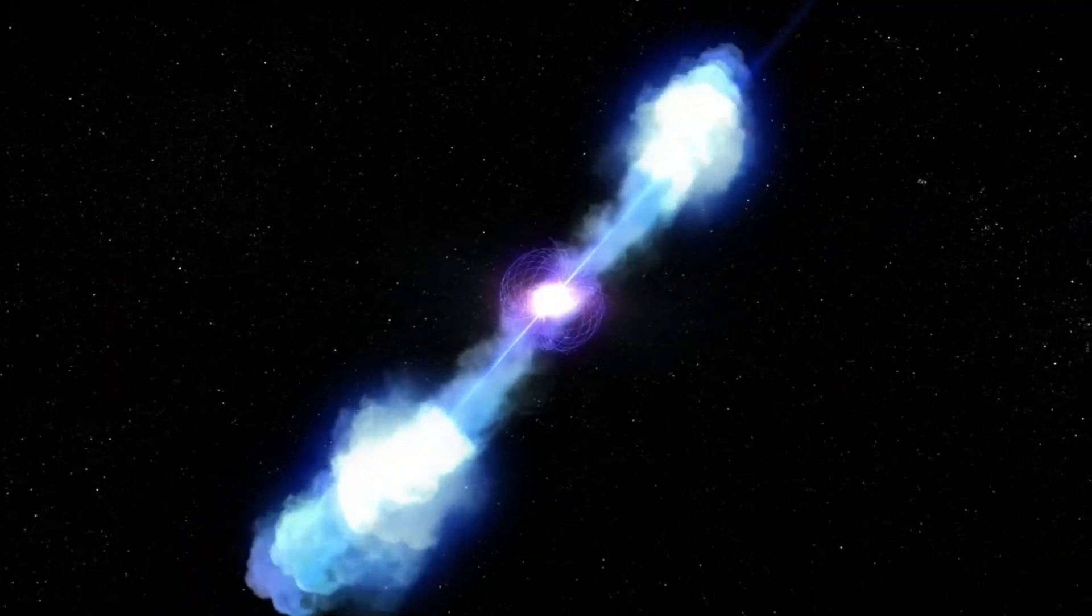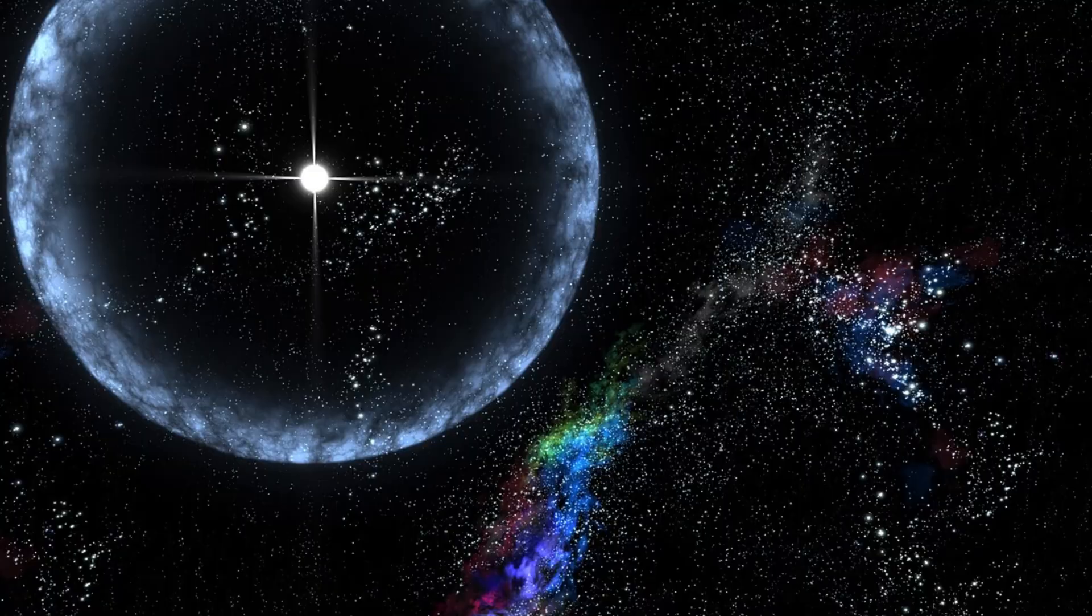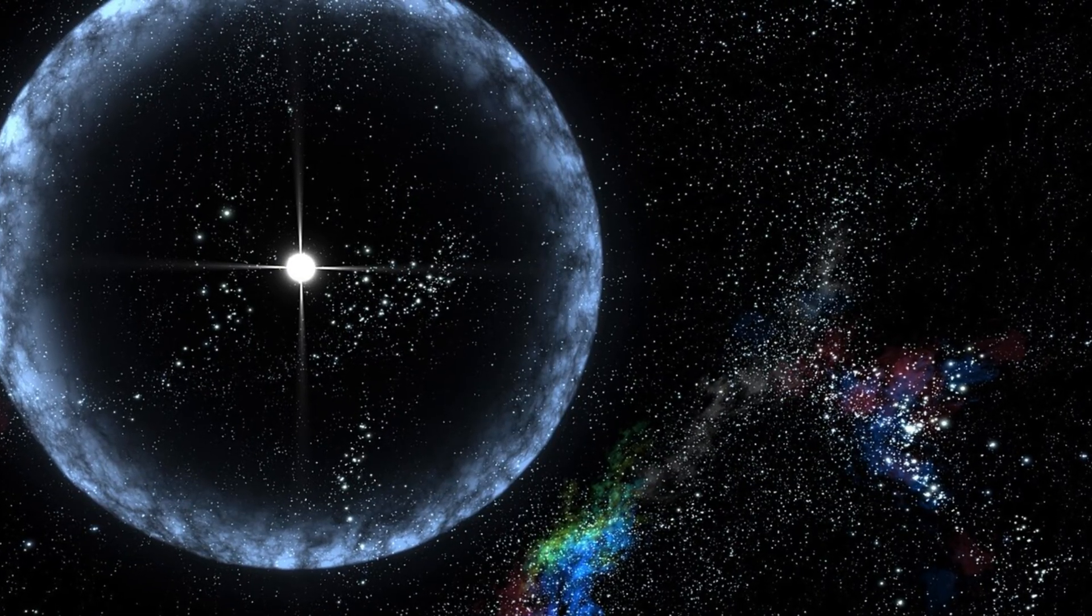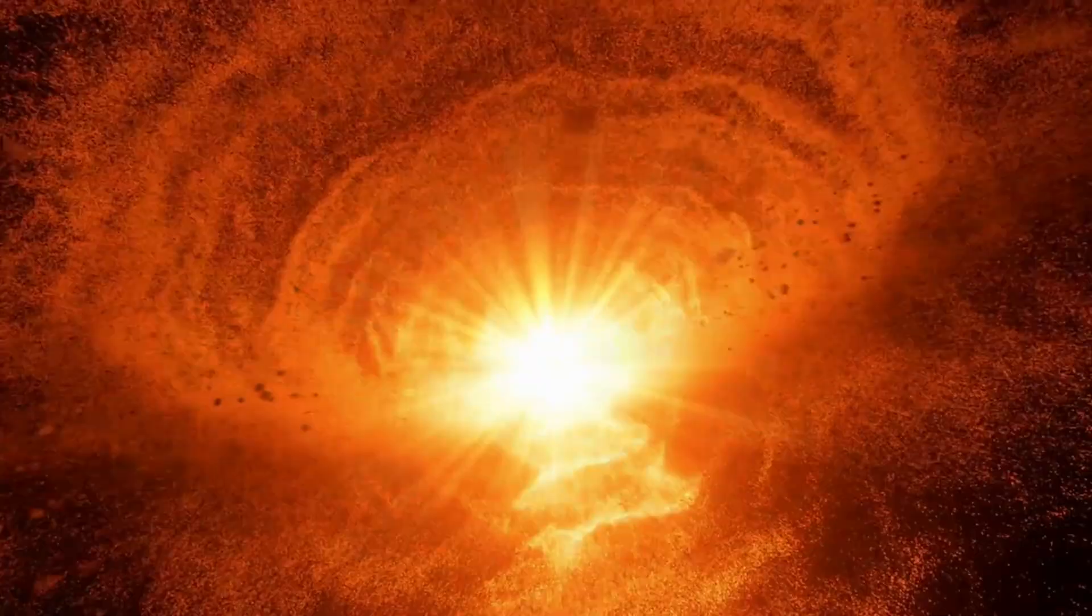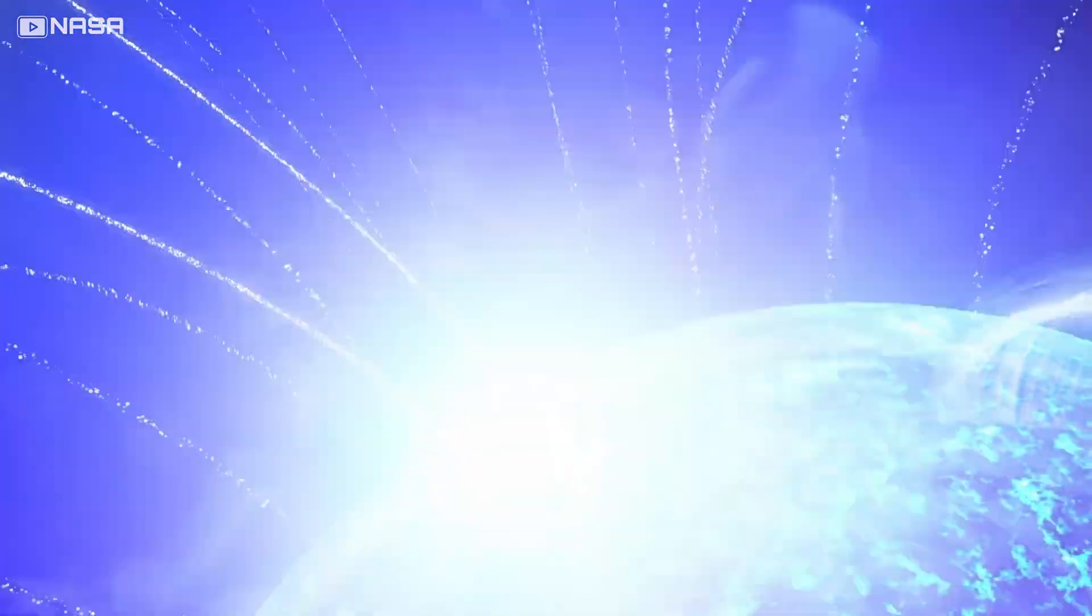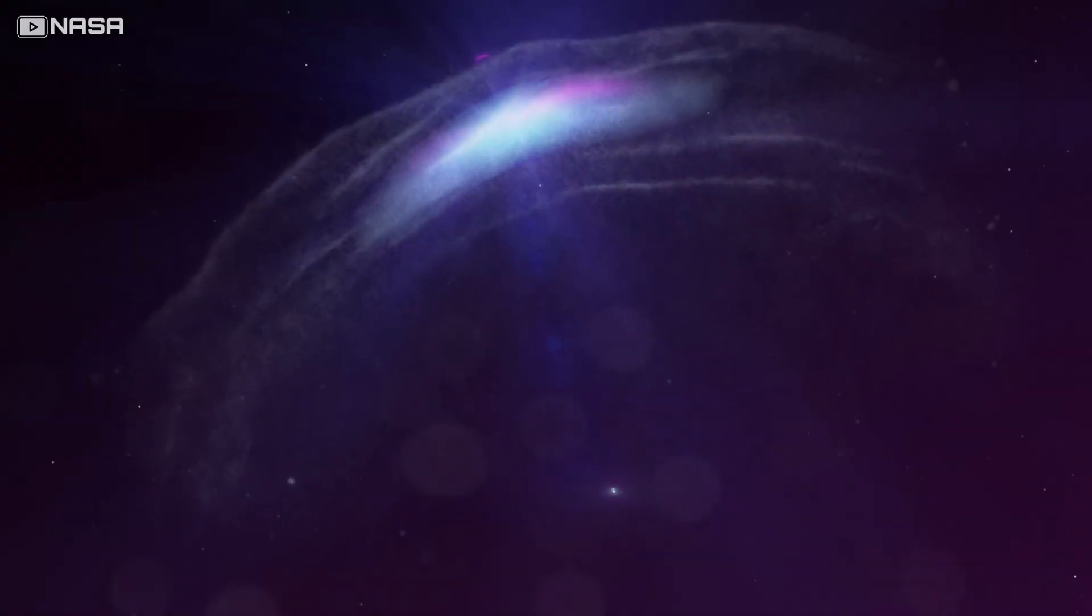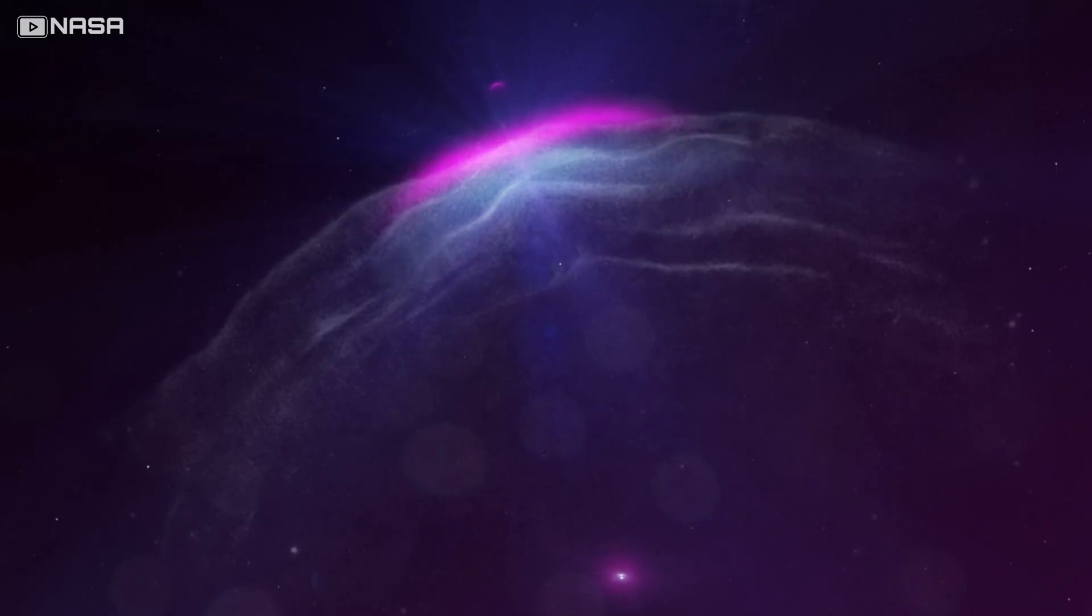When those lines realign, the crust cracks in what astronomers call a starquake. One magnetar, 50,000 light-years away, once flared so bright it ionized Earth's upper atmosphere. A city-sized object shaking the skin of a planet half a galaxy away. It lasted less than a second. Then silence again.